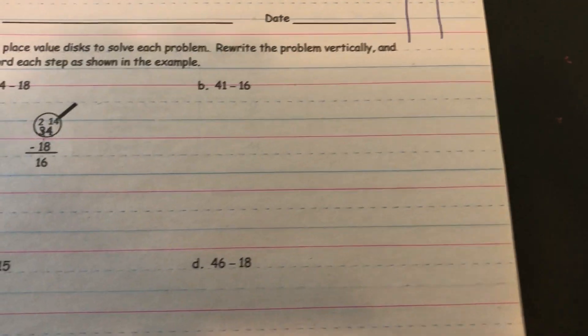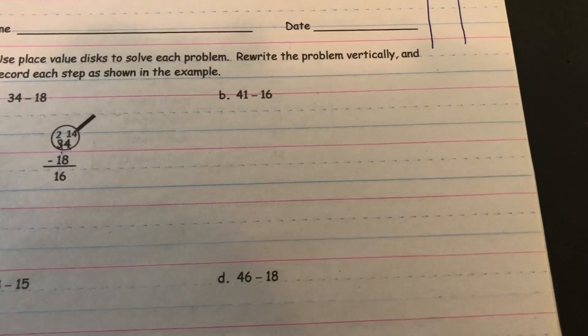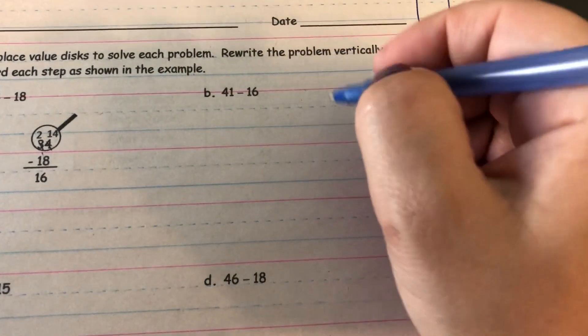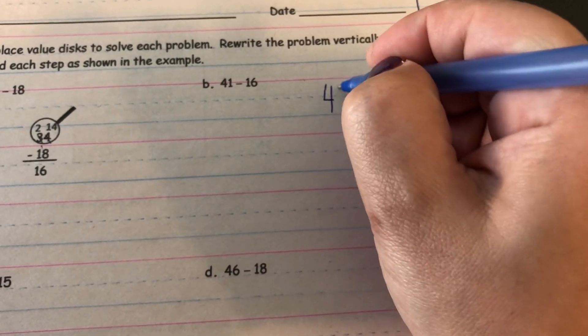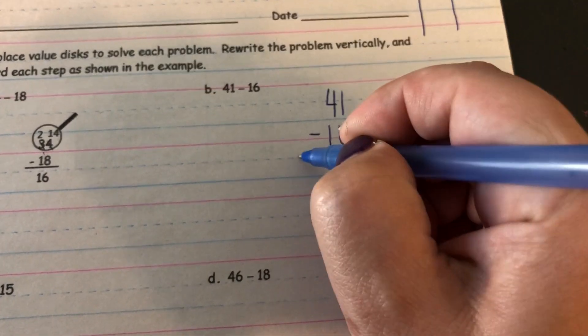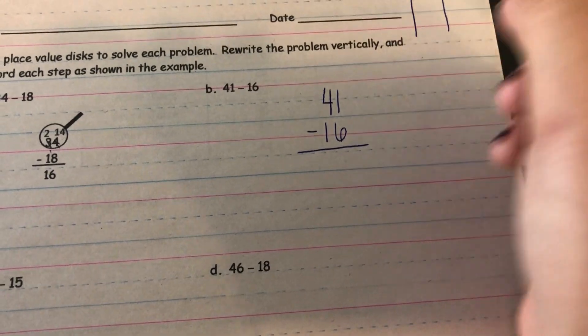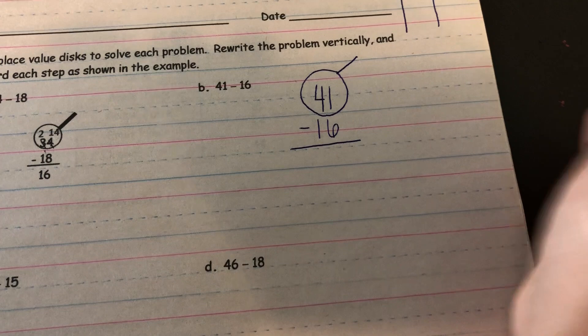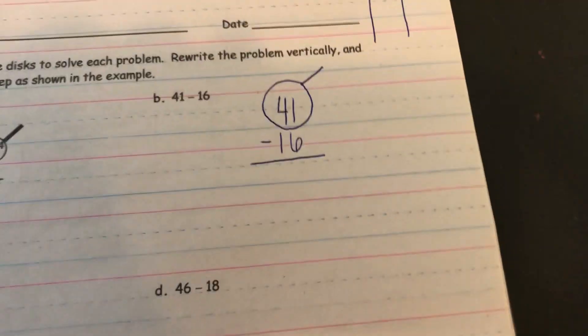Let's go ahead and look at B and I'll show you this problem. Alright, it says I've got 41 and I want to subtract 16. So I'm gonna use my magnifying glass. I need to look really carefully at 41. Alright, it has one in the ones place.